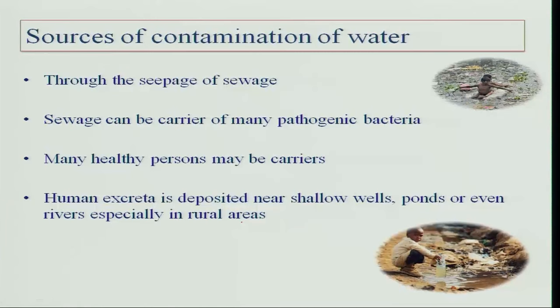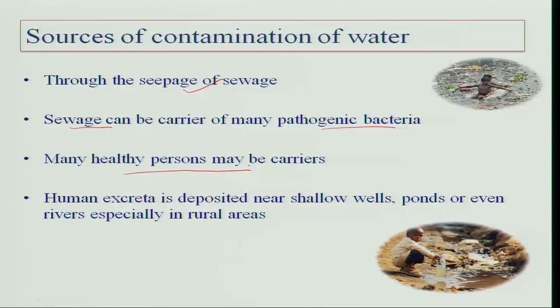Sources of contamination of water include seepage of sewage — when the water pipeline and the sewage pipeline go together, there is a chance of sewage seeping into the water. Sewage is a great carrier of pathogenic bacteria because it comes through the waste released from human beings, animals, and the washing of various things. Many healthy persons may be carriers of disease; when they bathe in the water or excrete in it, organisms may enter the water. Human excreta deposited near ponds and wells slowly seeps into rivers or ponds and gets contaminated.